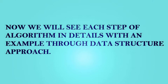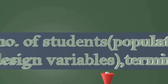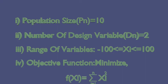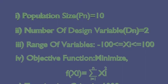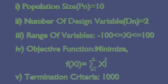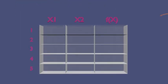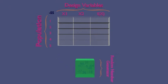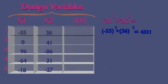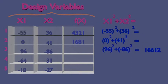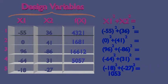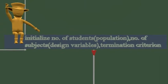Now, we'll see each step of the algorithm in detail with an example through a data structure approach. The first step of the algorithm is initialization. We initialize as follows: population size equal to 10, number of design variables are 2, range of variables is from minus 100 to 100, our objective function is summation of xi squared, and termination criteria is 1000. X1 and X2 are design variables and 1, 2, 3, 4, 5 are the population numbers. This is the random number generator from which design variables take random numbers as shown here. As our objective function is summation of xi squared, the values of x1 squared plus x2 squared get updated in the table. This is our first step.